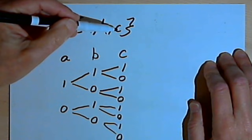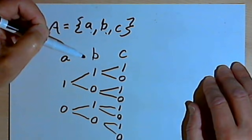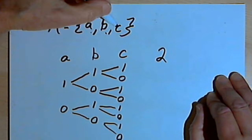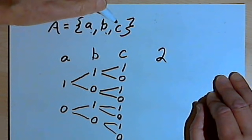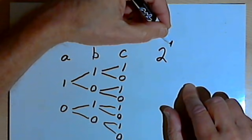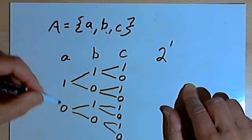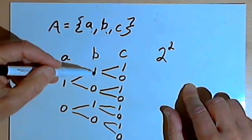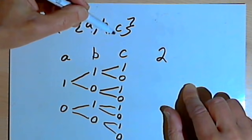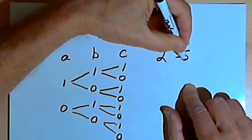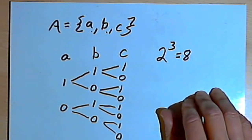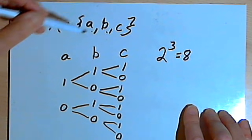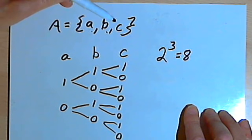What's happening is each time I add an element, I double the number of possible subsets. A simple way to say this is that you take the number two and raise it to the power equal to the number of elements in the set — in other words, raise it to the cardinality of the set. When there was one element: two to the first power equals two, and there were two possible subsets. With two elements: two to the second power is four, and there were four possibilities. With three elements: two to the third power is eight, and there are eight possibilities. So to find the number of possible subsets for a given set, take two and raise it to the power equal to the number of elements in that set.